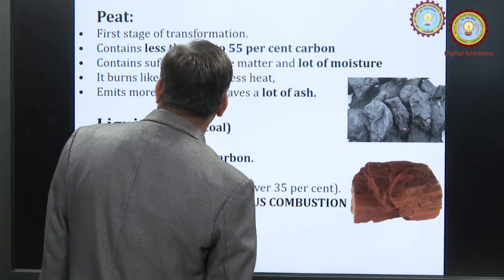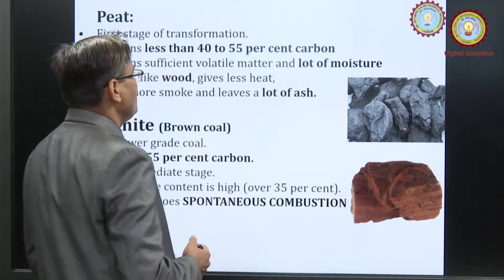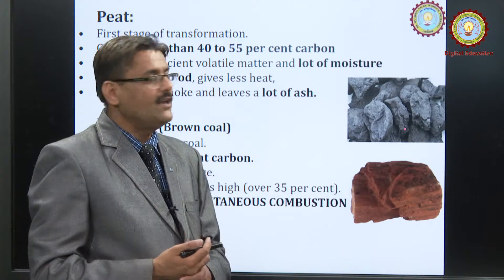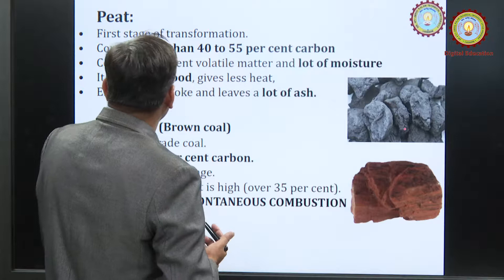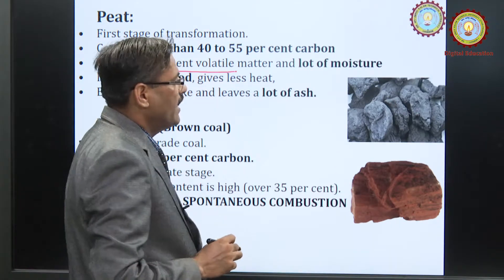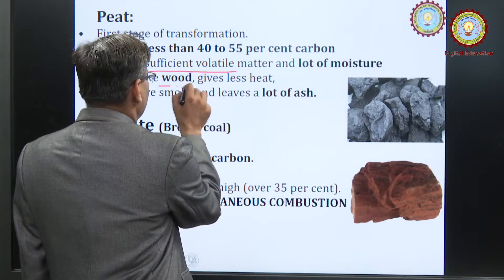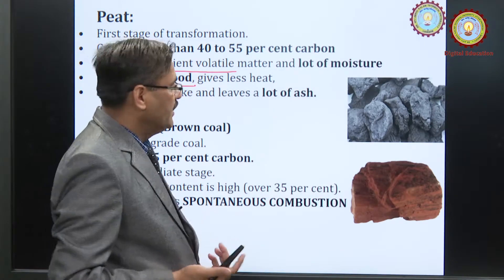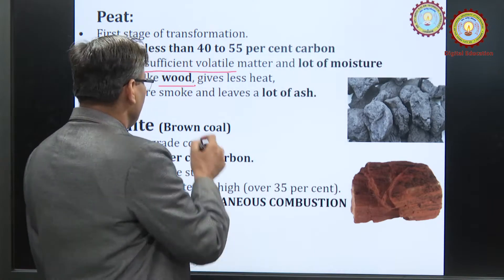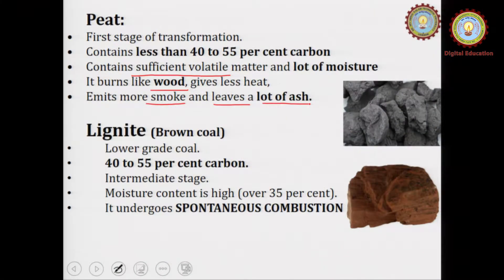The qualities of peat, the first stage of transformation: it contains 40 to 50 percent carbon and contains sufficient volatile matter and a lot of moisture. It burns like wood and gives very little heat, emits more smoke, and leaves a lot of ash. That is why peat is a low rank coal.